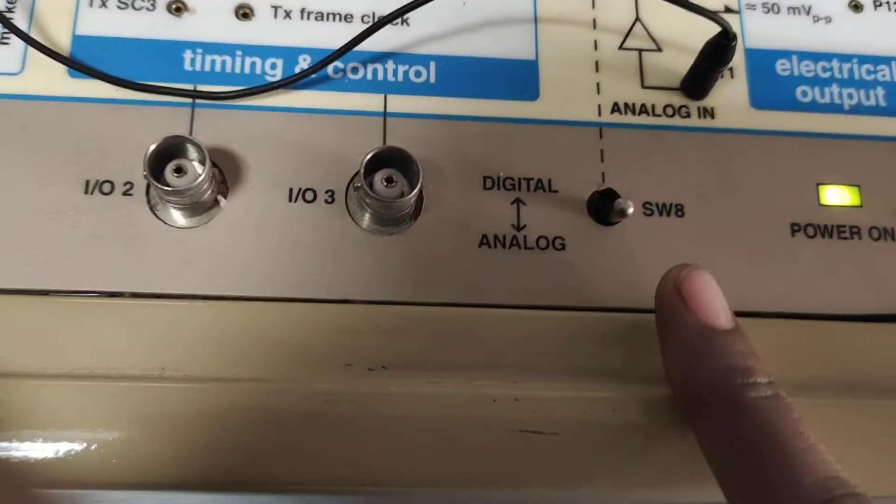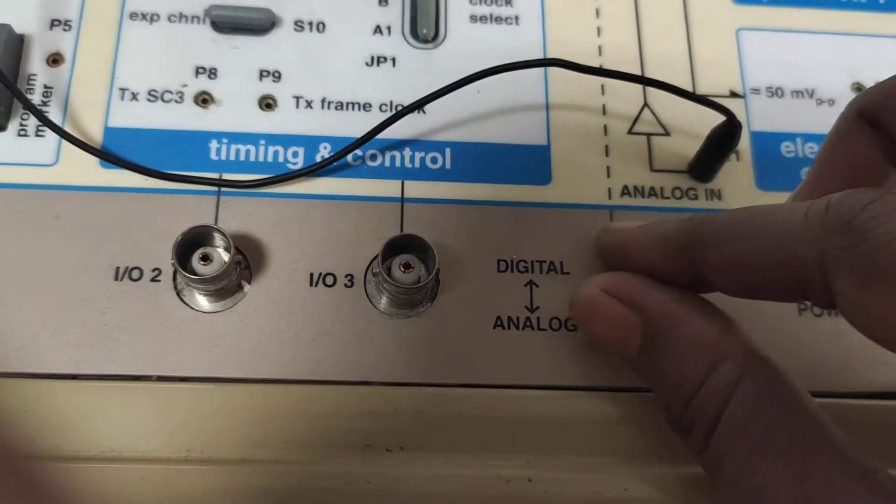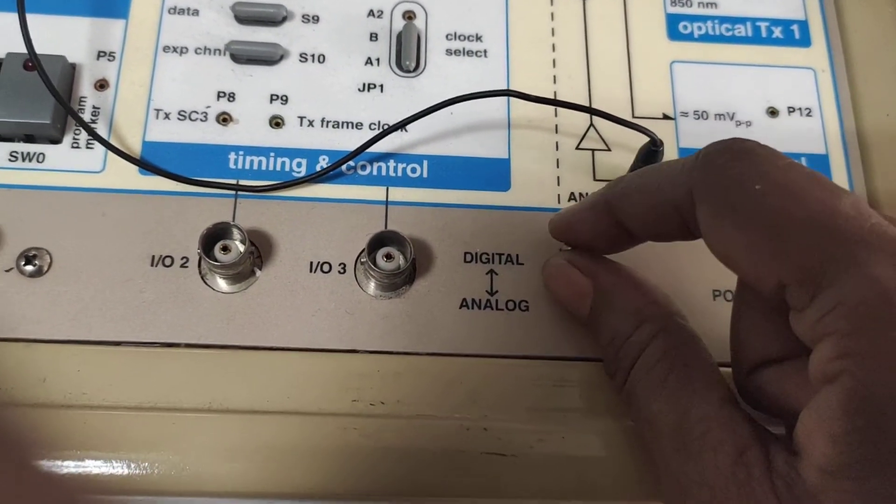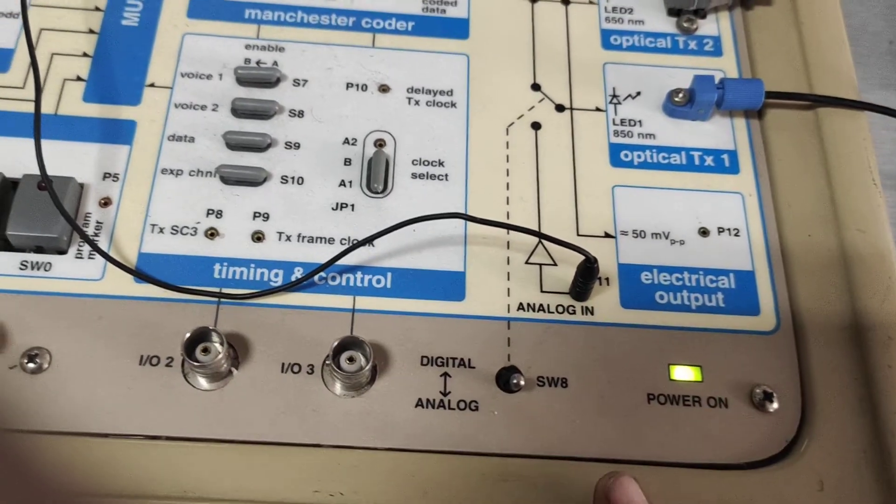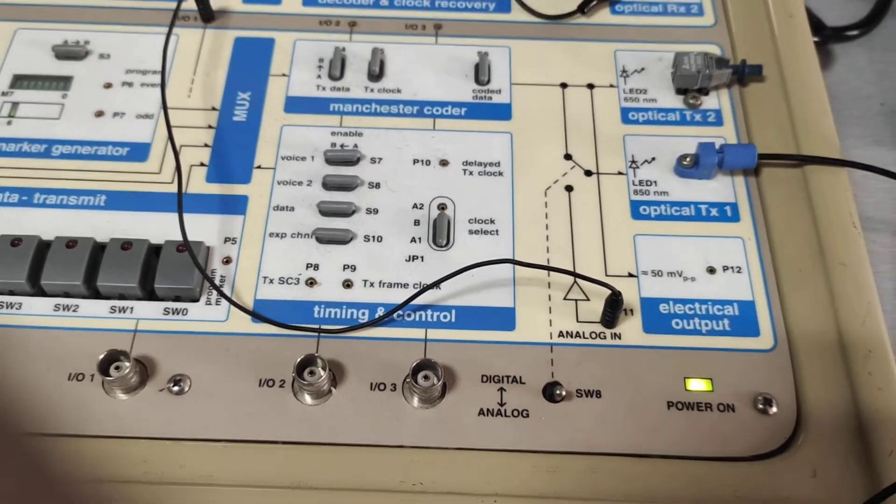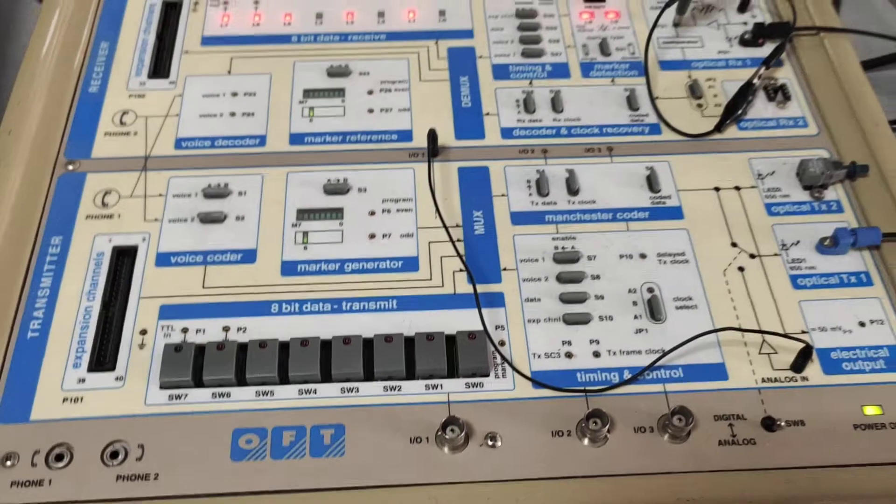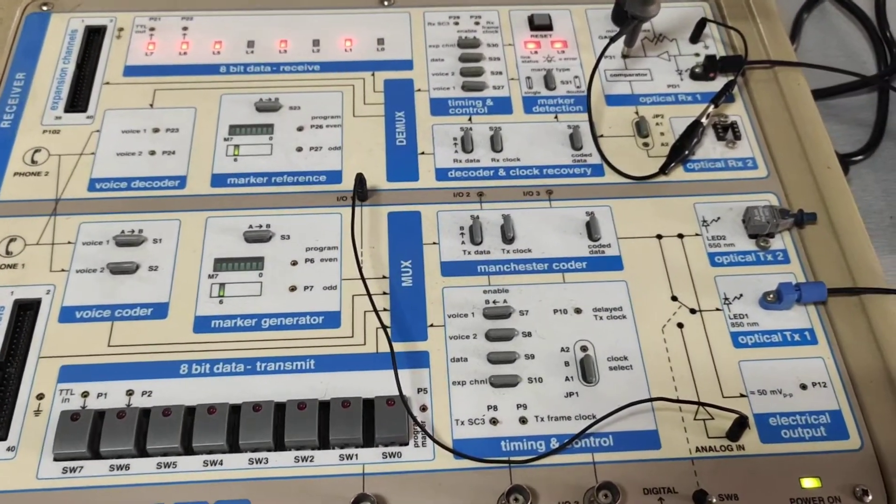This is Analog and Digital Communication Switch. We are using this for the Analog and Digital Communication Link experiment. So let us start with the experiment.